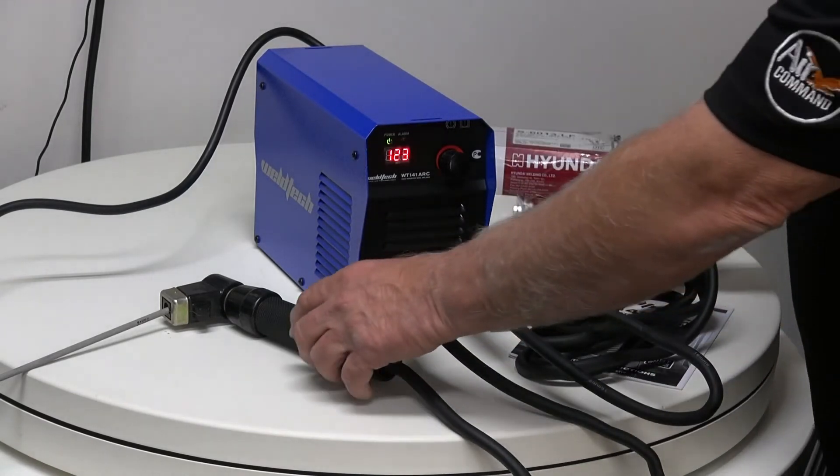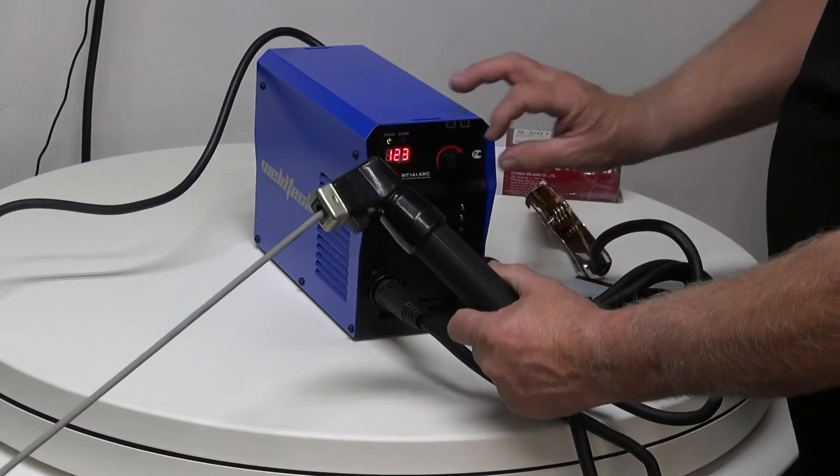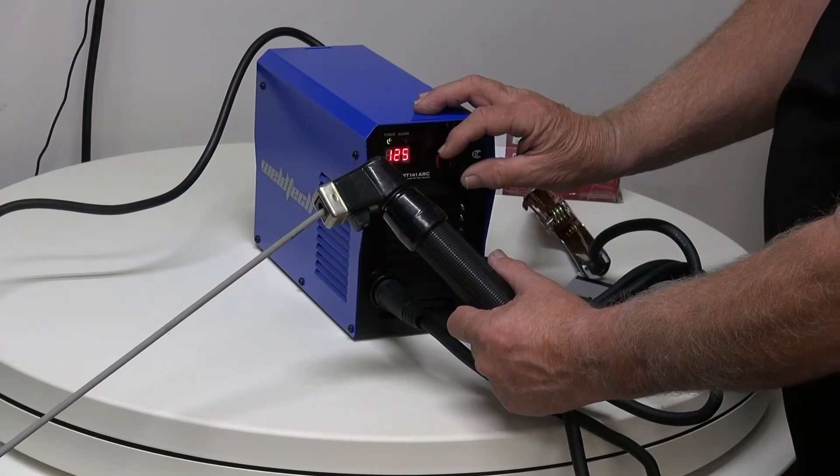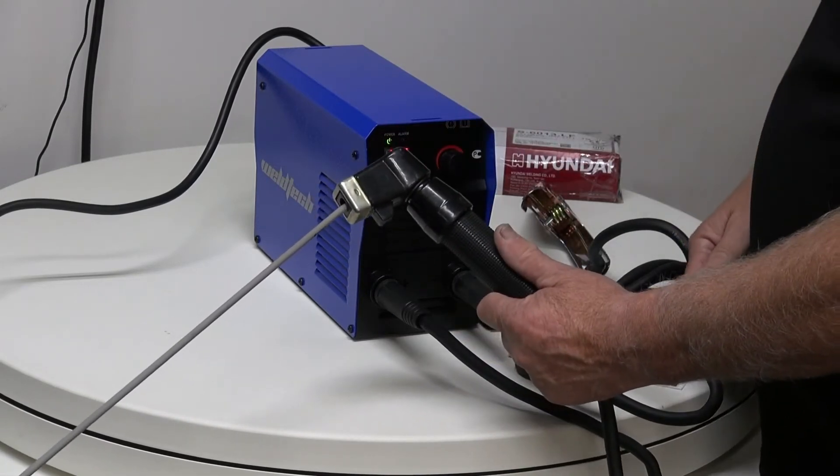So it's a very simple machine to use. I've got a 3.2. I've checked the packet. And we're going to set it at 125 amps. And now the welder is ready to go.